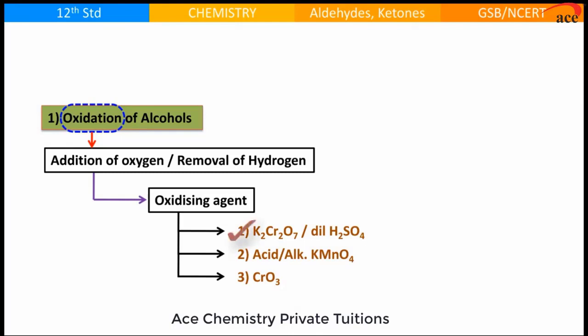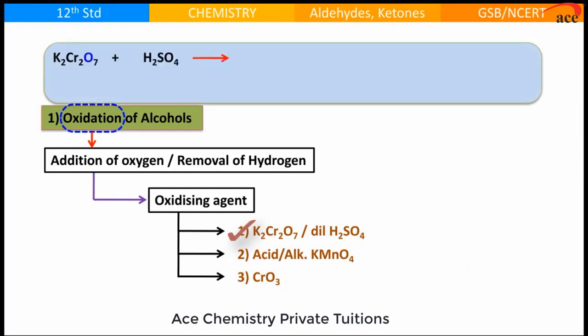What is K2Cr2O7 and dilute H2SO4 react together? In the presence of acidified potassium dichromate, if you see the reaction, this will produce nascent oxygen, which is responsible for oxidation.